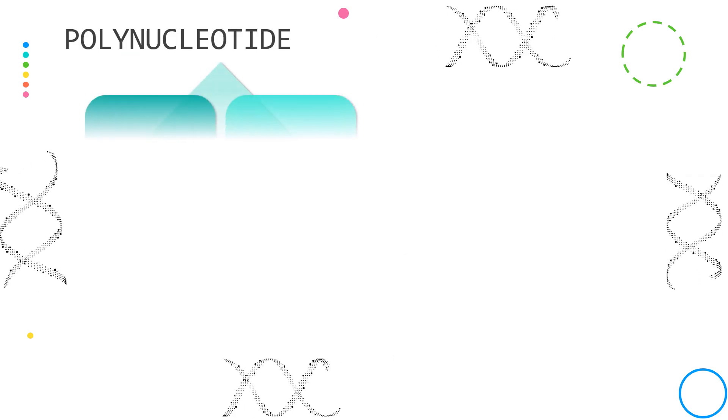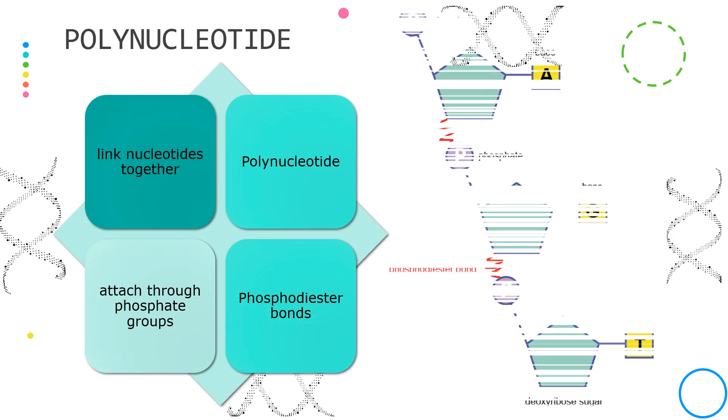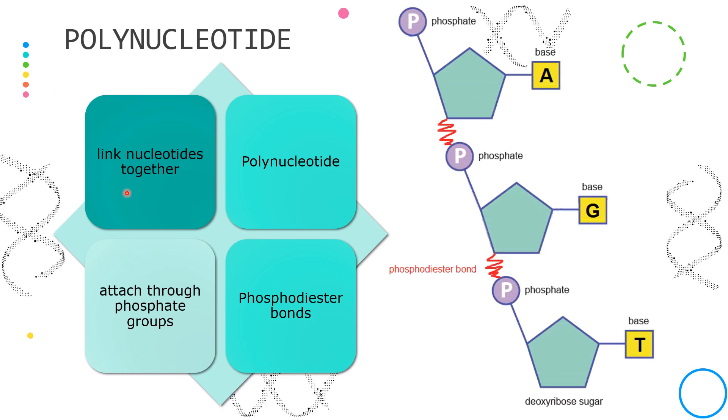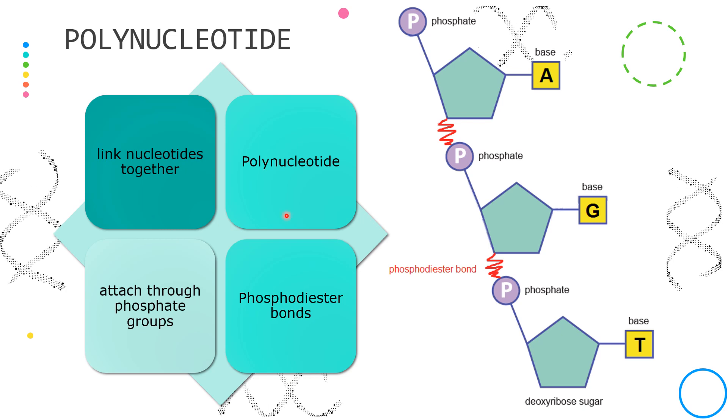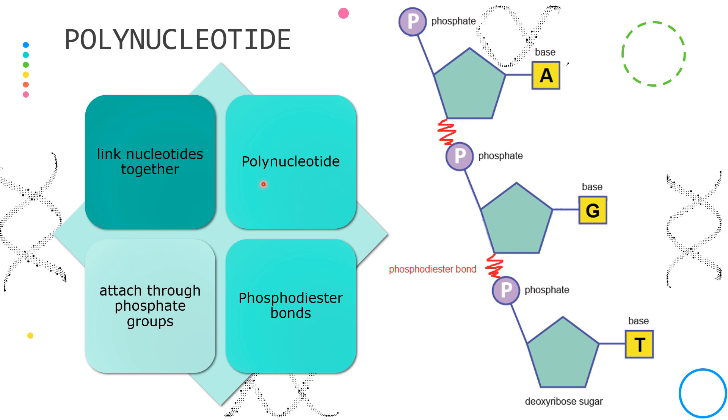The next stage in building up the structure of a DNA molecule is to link the individual nucleotides together to form a polymer. This polymer is called a polynucleotide.